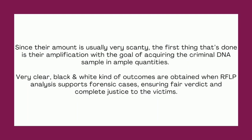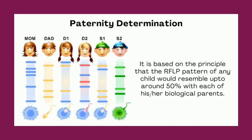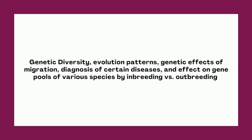RFLP is also used in the determination of paternity or for tracing ancestry in family trees. Parenthood of a child lost in childhood may be established using multiple RFLP analyses. It is based on the principle that the RFLP pattern of any child would resemble up to around 50% with each of his or her biological parents. Additionally, genetic diversity, evolution patterns, genetic effects of migration, diagnosis of certain diseases, and the effect on gene pools by inbreeding versus outbreeding patterns can also be judged using RFLP. The technique is a vital tool in genome mapping and genetic disease analysis.